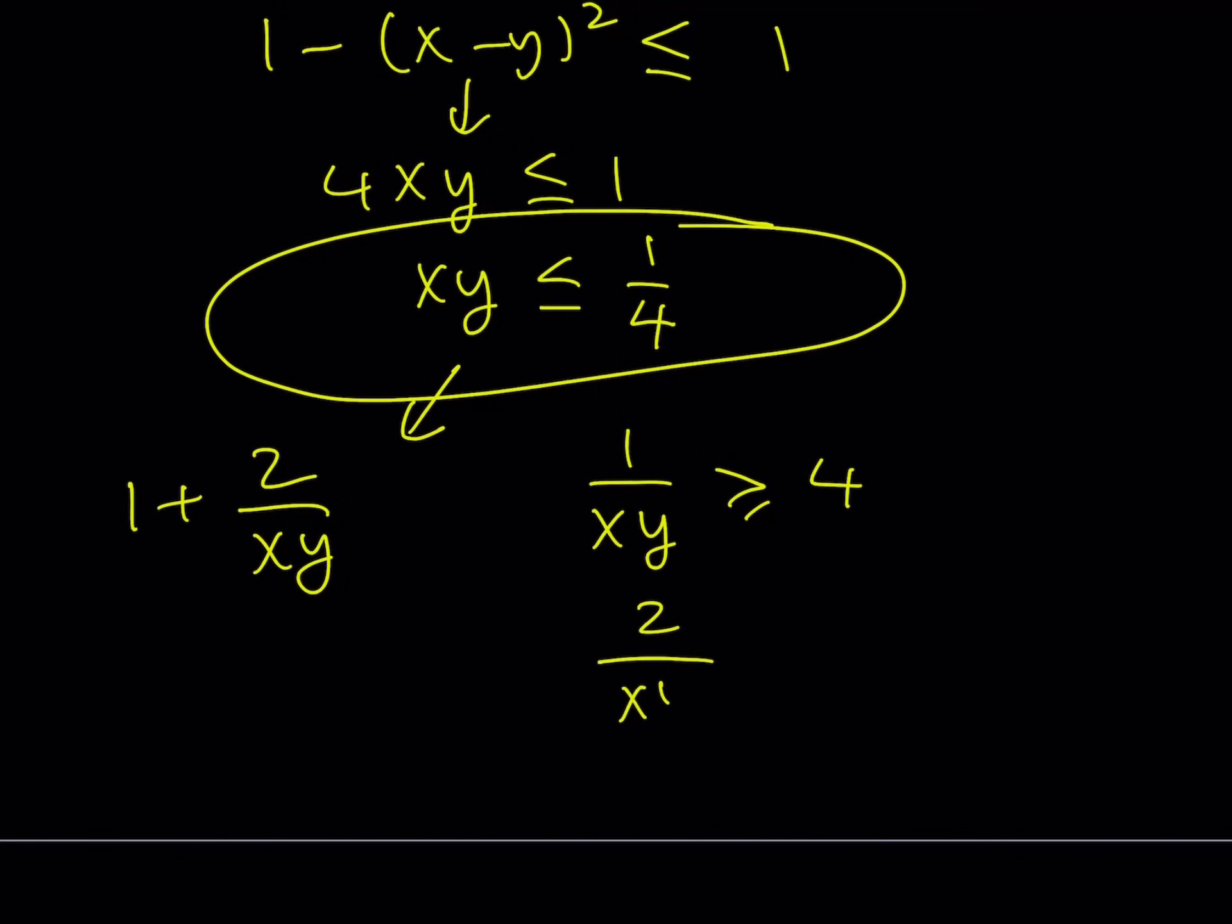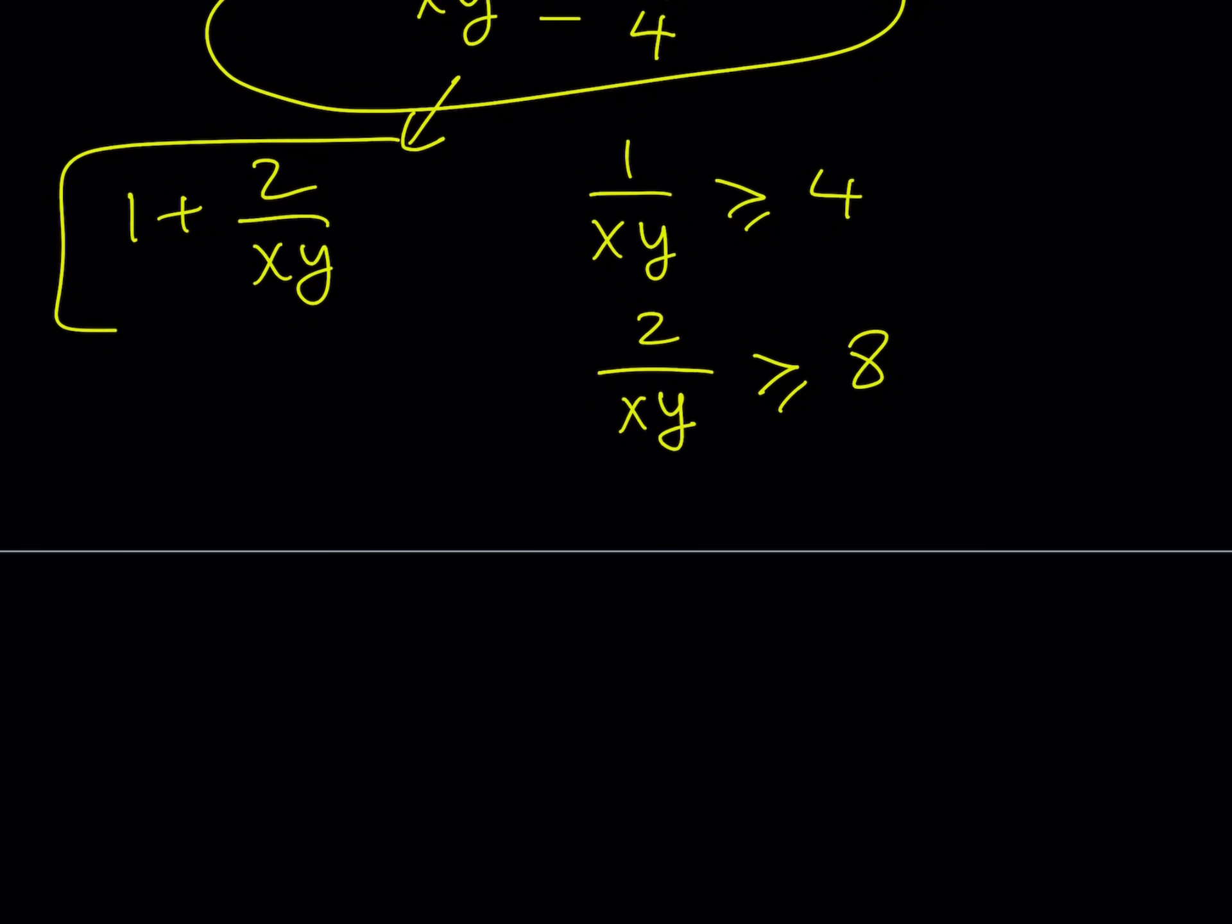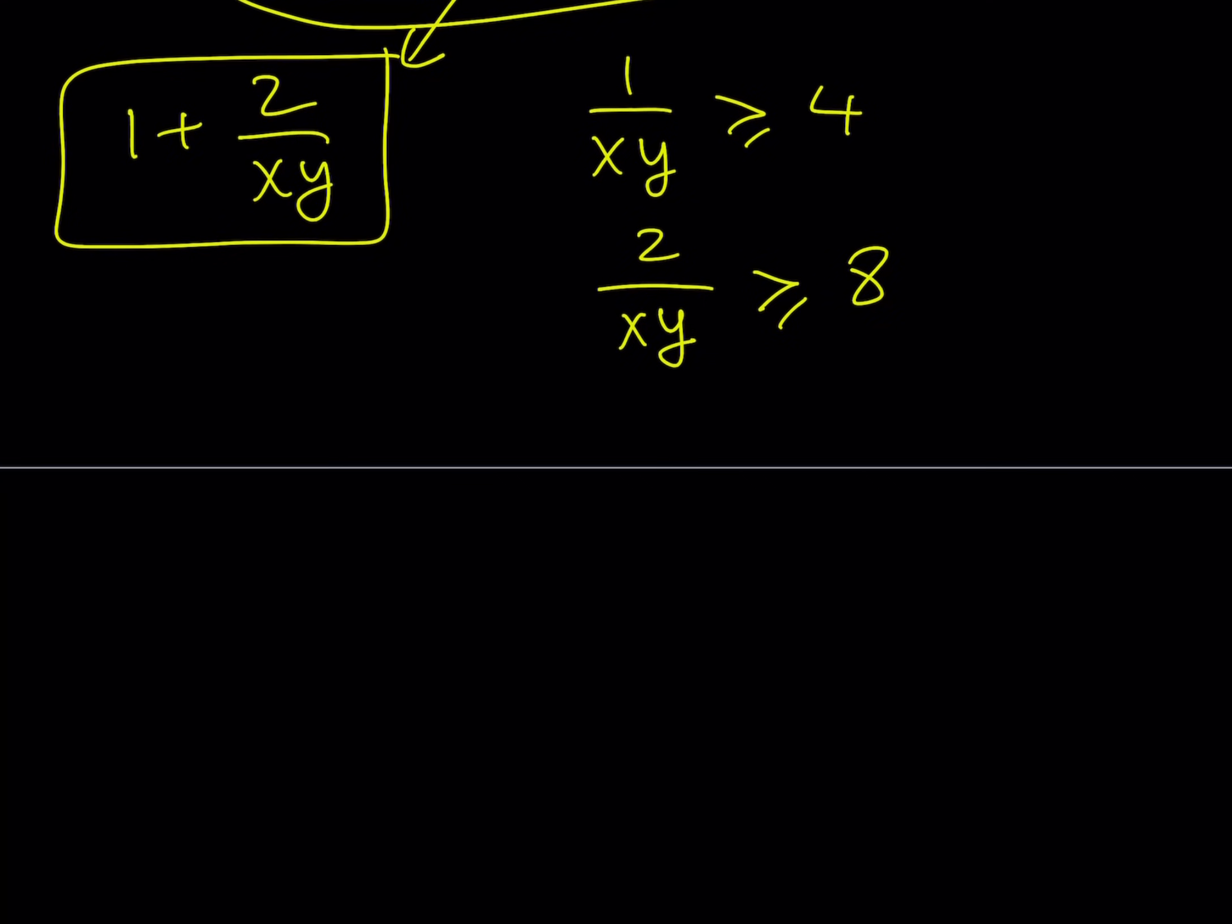And then I do need 2 times this, so let's go ahead and multiply both sides by 2, which is a positive number. This implies that 2 over xy is greater than or equal to 8. And notice that I only need to add 1 to both sides. And if I do, I get 1 plus 2 over xy is greater than or equal to 9.